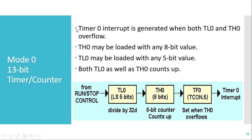Mode 0 is a 13-bit timer counter mode. In this we have two timer registers: TL0 and TH0. TL0 has only five lower bits — the register is eight bits but only the lower five bits are used for counting. TH0 is also eight bits and the entire register is used for counting. We can load any five-bit value into TL0, so it acts as a divide-by-32 counter. Whenever 32 clock pulses are given, this block gives one clock pulse to TH0.